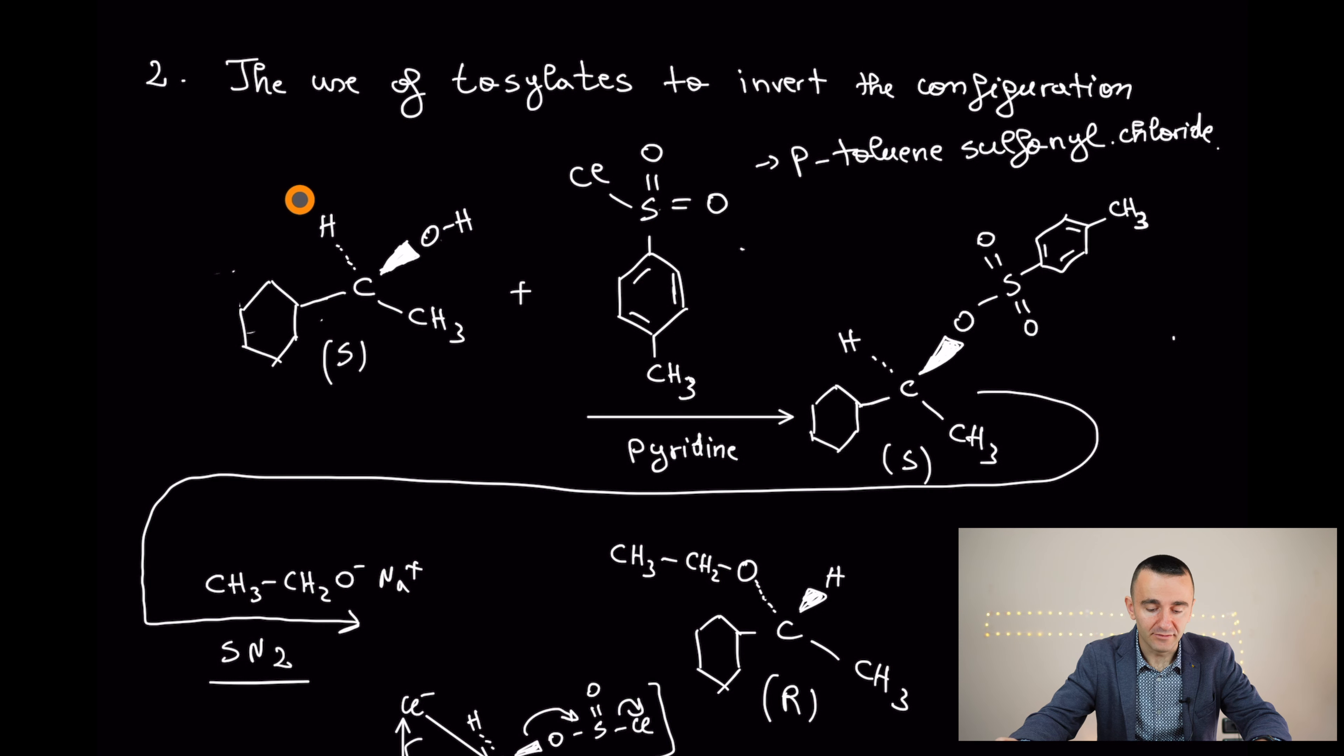Let's move further. The use of tosylate to invert the configuration. This is especially when you're dealing with RS configuration. For example, if you start from an S product, you use this p-toluenesulfonyl chloride, that is a good leaving group. This is going to break only the bond between oxygen and hydrogen here, not all this OH, and making it a better leaving group. And what is going to happen after, if you perform an SN2 reaction,